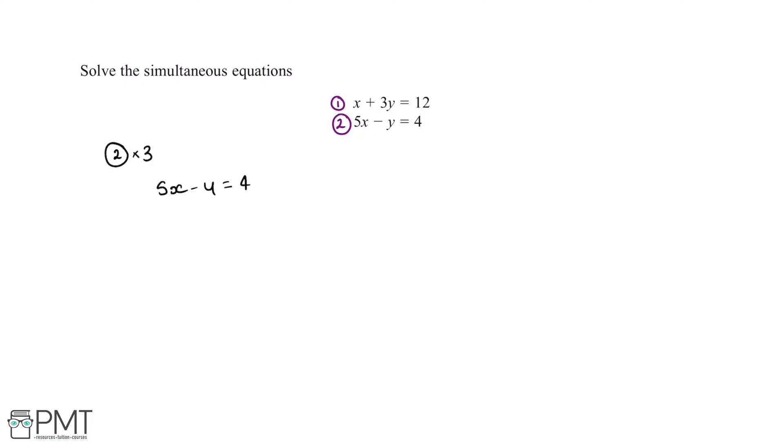In order to multiply this equation, we need to multiply both the left-hand side and the right-hand side by 3. So 5x minus y multiplied by 3 will give us 15x minus 3y, and 4 multiplied by 3 is 12.